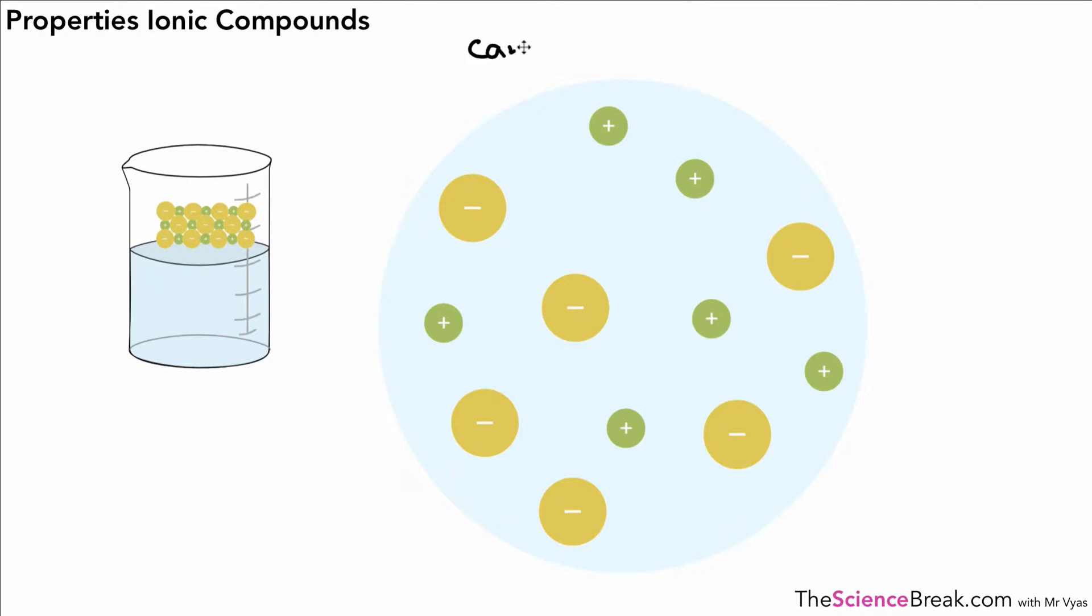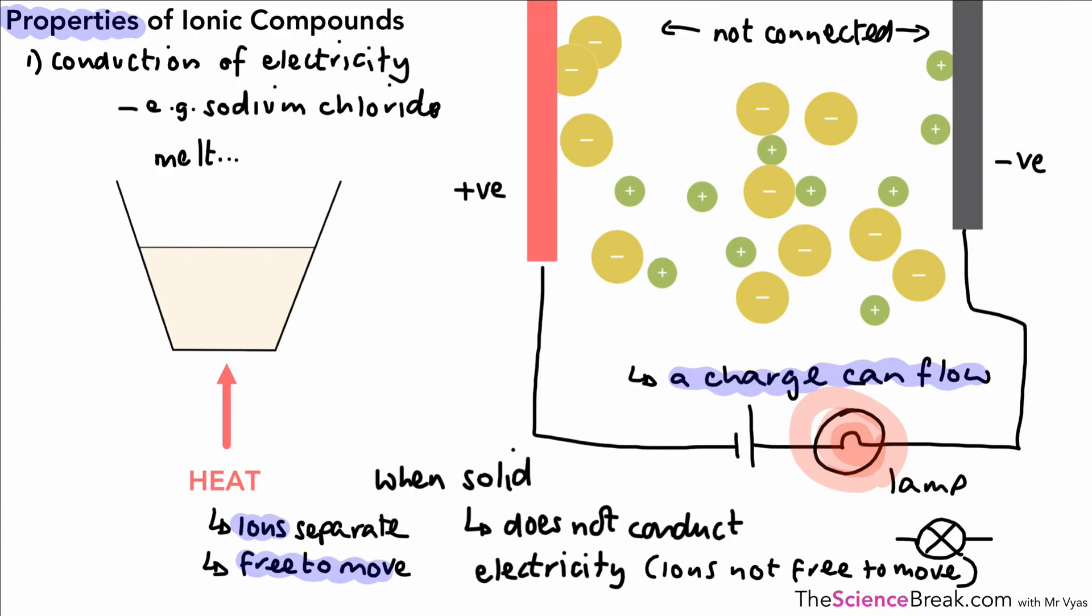The ionic compounds can conduct electricity when dissolved. So it's not only when they're melted but they can conduct electricity when they are dissolved as well. In a similar way to what we did previously we could explain it like this: the ions are free to move and the charge can flow.